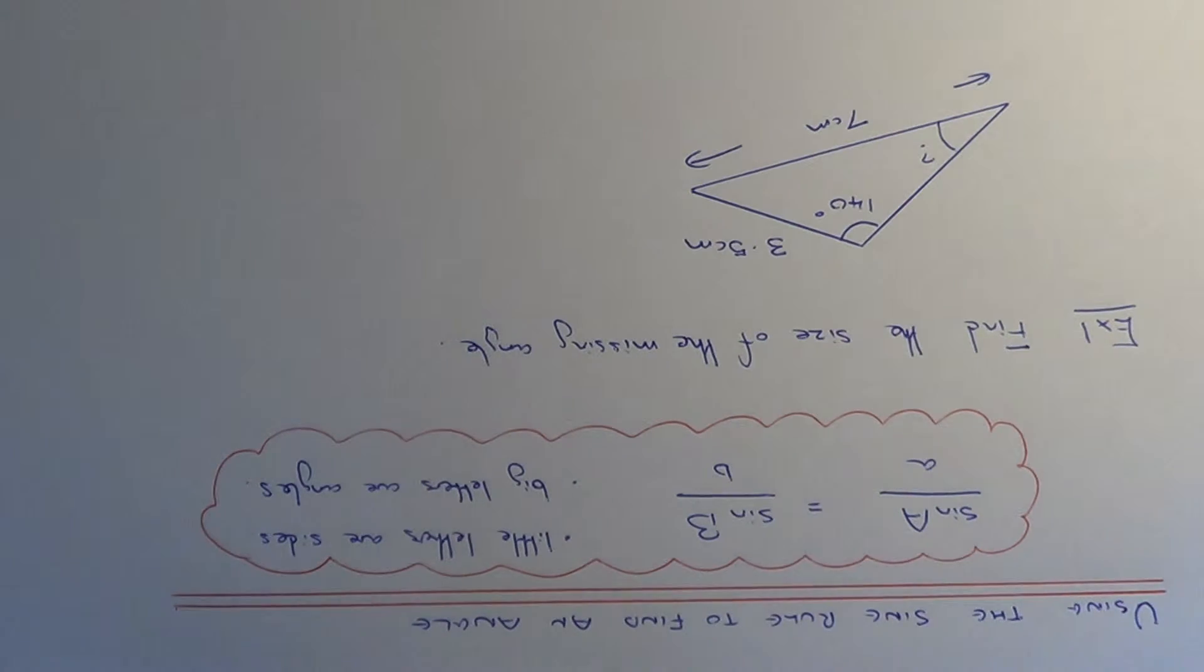Hi, welcome to my second part on using the sine rule. In this video today I'm going to show you how to work out the missing angle in a non-right angled triangle.